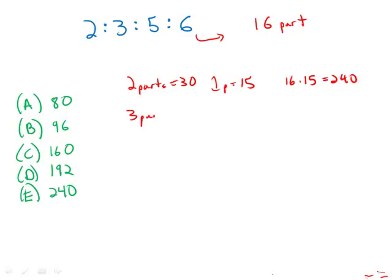If three parts equals 30 hours, that means one part equals 10 hours. And then 16 times 10 would be 160. So that's a possibility.